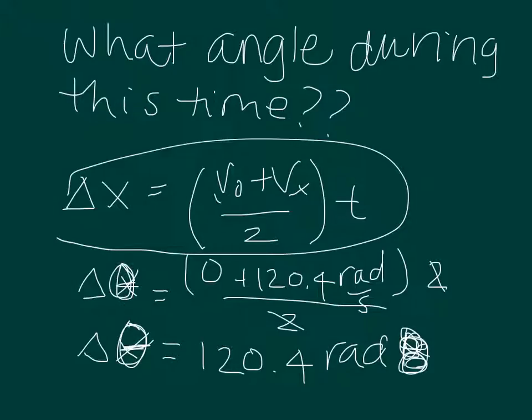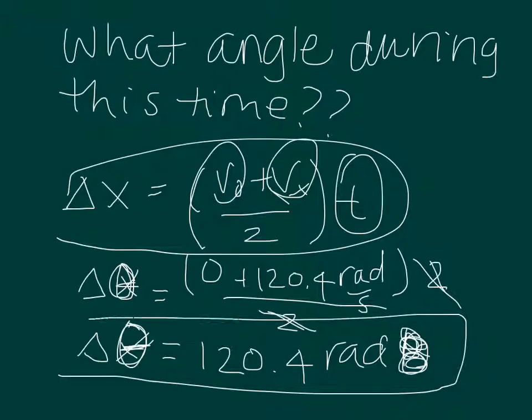So we just plug in velocity, initial velocity 0, final velocity which we found 120.4 radians per second. Multiply it by 2, which we're given in the problem. The 2 is canceled out, and our answer for the change in angle is 120.4 radians.